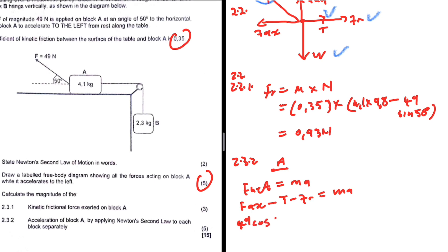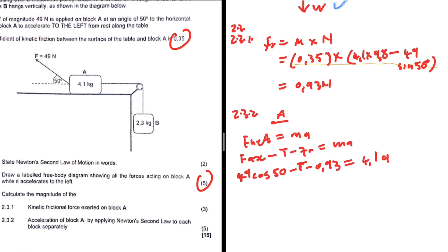F_Ax is 49 cos(50°), minus the tension T, minus the frictional force 0.93, equals 4.1a. Computing 49 cos(50°) gives approximately 31.5666. Rounding appropriately: 30.5666 − T = 4.1a. This is equation one.